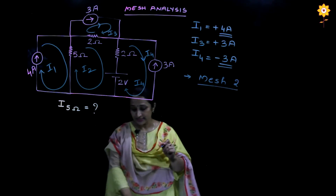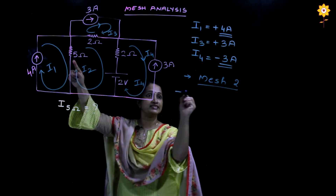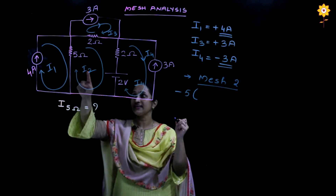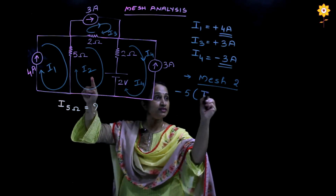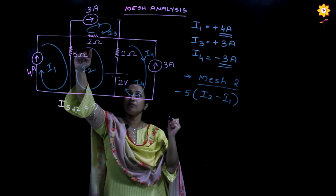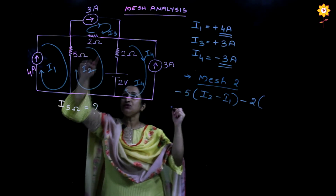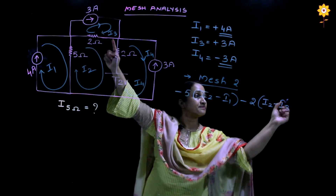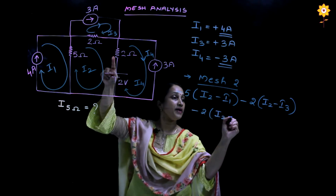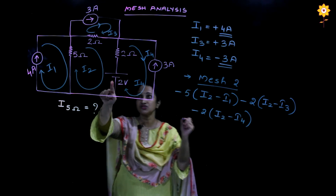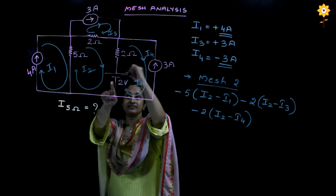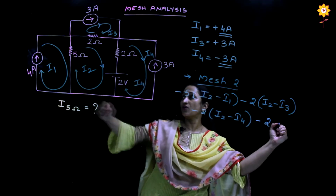Following the same KVL procedure for mesh 2: the 5 ohm resistor has two currents i2 and i1 in opposite directions, giving minus 5 times (i2 minus i1). The 2 ohm resistor has i2 and i3 in opposite directions: minus 2 times (i2 minus i3). Another 2 ohm resistor gives minus 2 times (i2 minus i4). For the voltage source, since i2 first touches the positive terminal, we write minus 2.